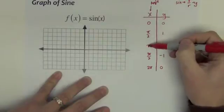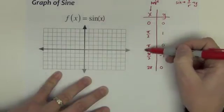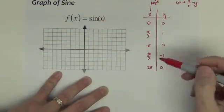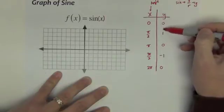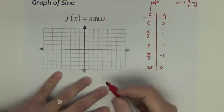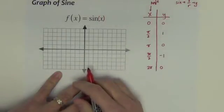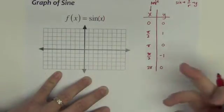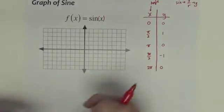By picking these points for the x, these values to substitute in, I've guaranteed that I get the 0s and the 1s, the easy points to plot. I can avoid all the fractions and the radicals. So really I can pick anything, I just picked the easy ones.